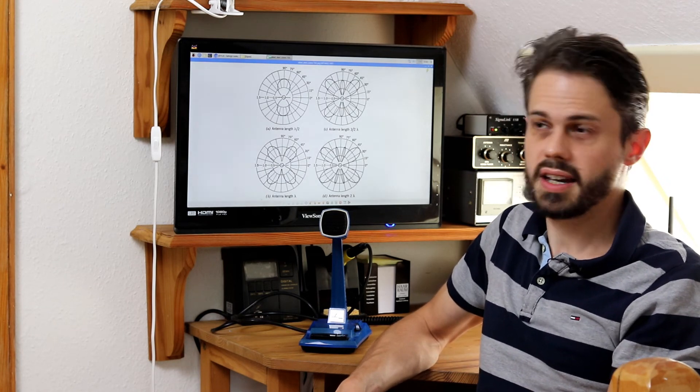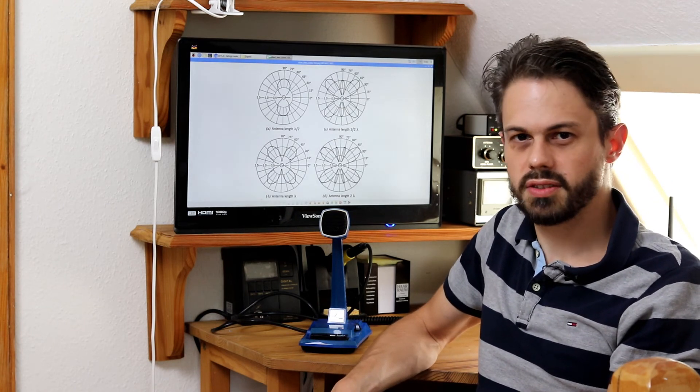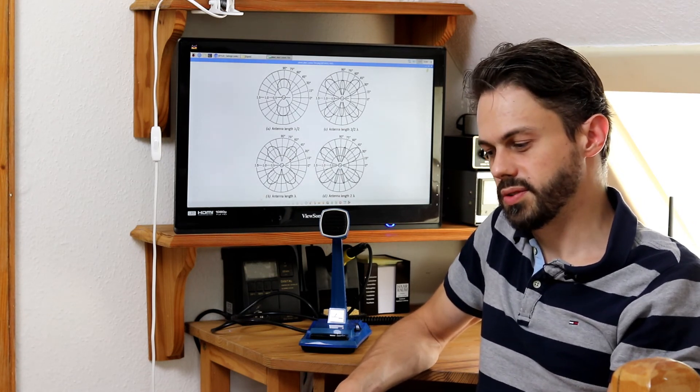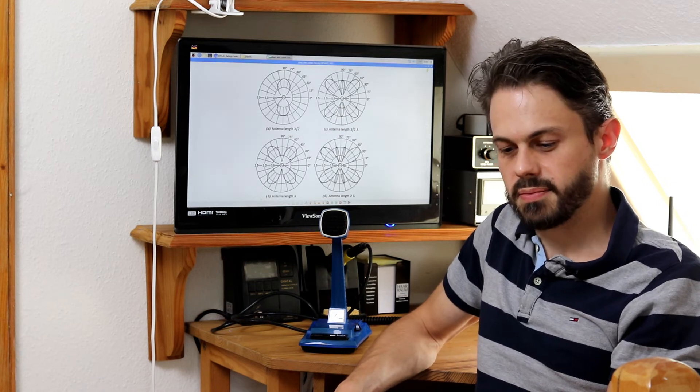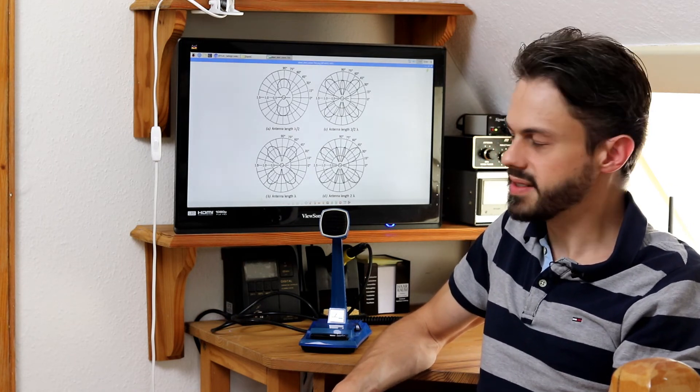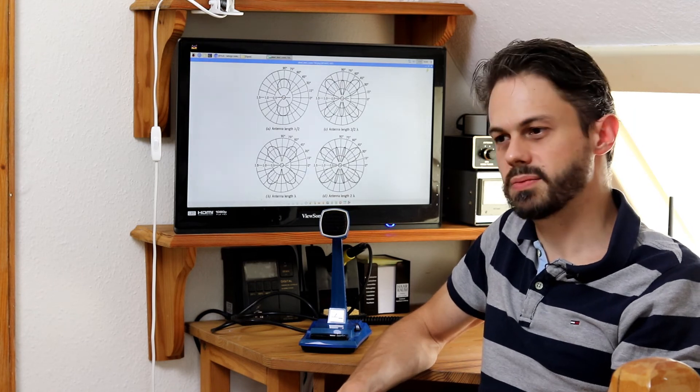So that's kind of my point here in this video, especially if you're not an experienced ham to really try simple antennas. Try a simple monoband dipole. It's an amazing antenna. It works great.